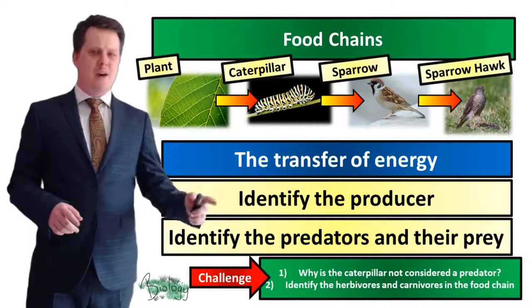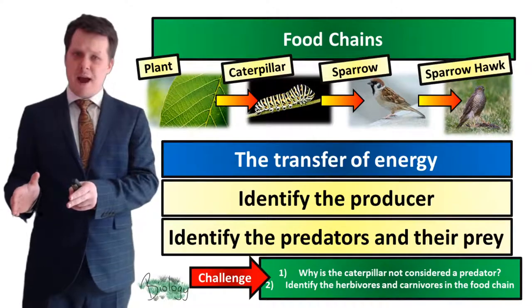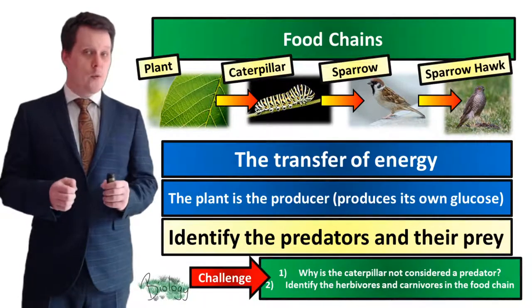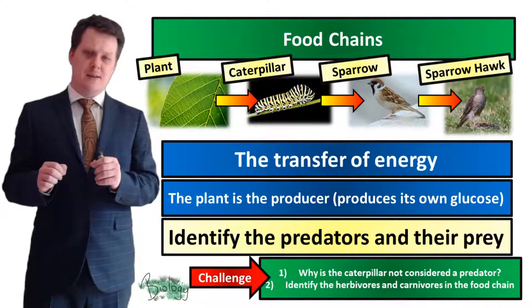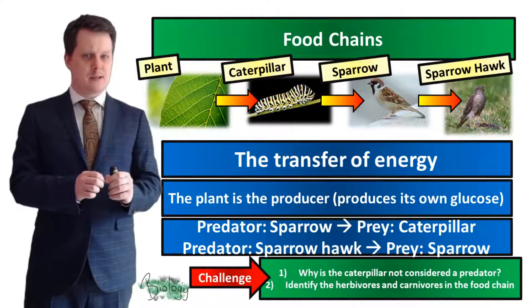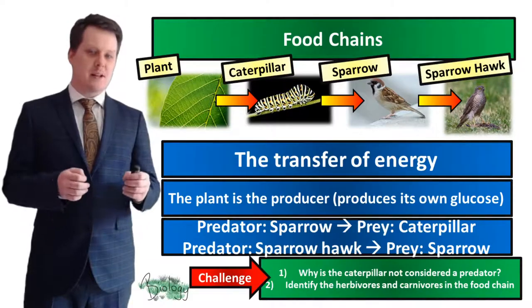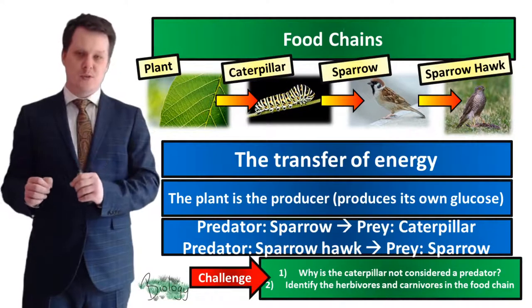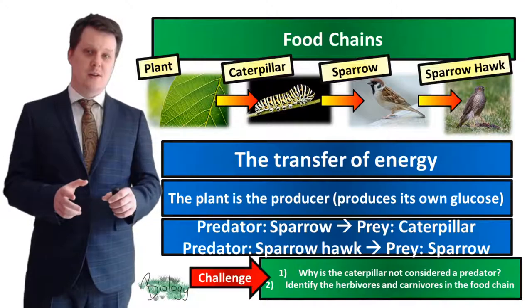The arrows represent the transfer of energy — from the plant to the caterpillar, from the caterpillar to the sparrow, and from the sparrow to the sparrowhawk. The producer is the plant, because it produces its own glucose through photosynthesis. The predator-prey relationships are: the sparrow (predator) and caterpillar (prey), and the sparrowhawk (predator) and sparrow (prey). The caterpillar is not considered a predator because plants don't move, so caterpillars don't hunt them. The caterpillar is an herbivore, while the sparrow and sparrowhawk are carnivores.